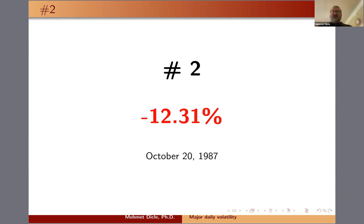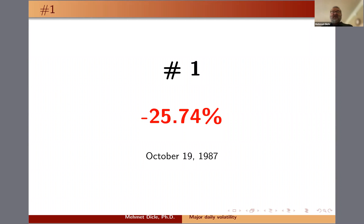And number 2: 12.31%. I want to remind you this is the intraday volatility — high minus low divided by the close — on October 20th, 1987. And finally, number 1: an intraday volatility of 25.74% on October 19th, 1987.